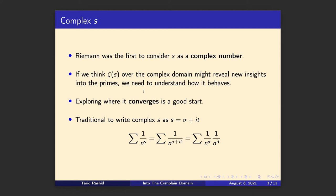Before we dive in, let's set some conventions. s is complex, and by tradition — in almost every resource, text, course or lecture — it's written as sigma plus it, where sigma is the real part and t is the imaginary part. These are arbitrary labels; it could be a + ib, but this has become tradition. So if we write the sum 1 over n to the s explicitly as sigma plus it, we can split it into the product of two factors: 1 over n to the sigma (the real part) and 1 over n to the it (the imaginary part).